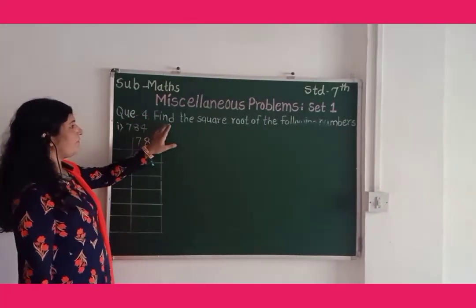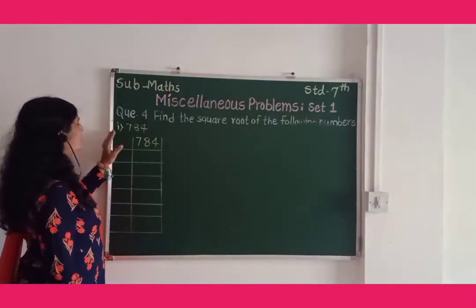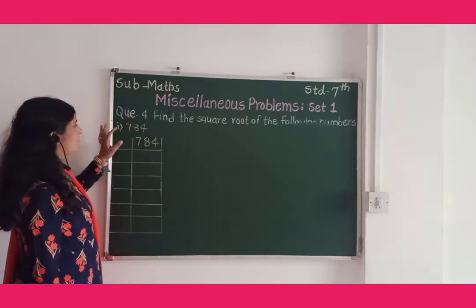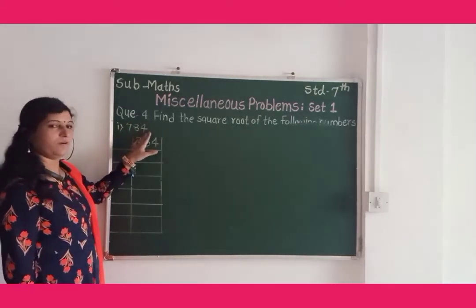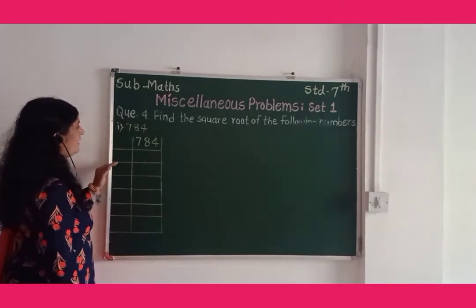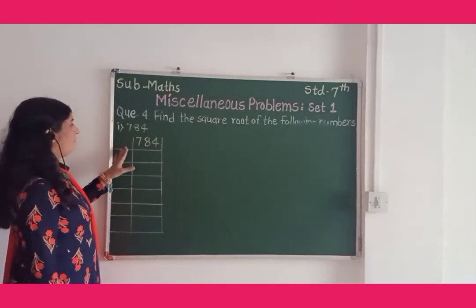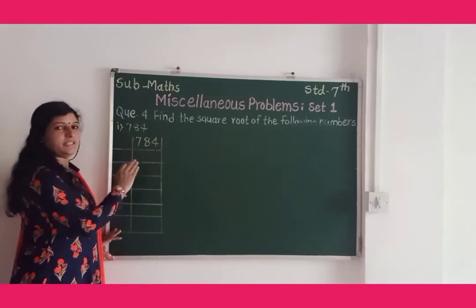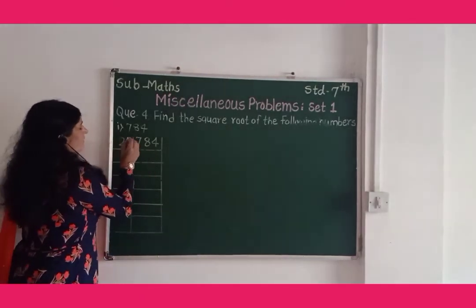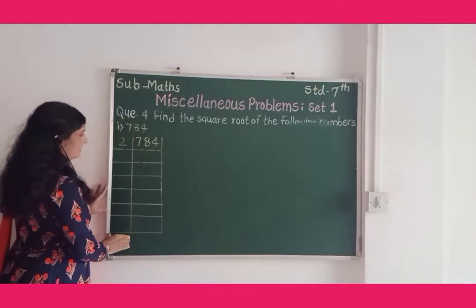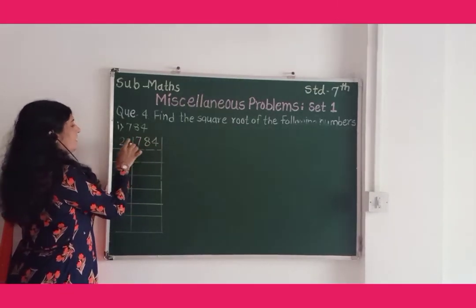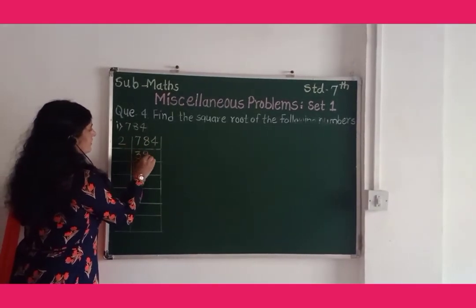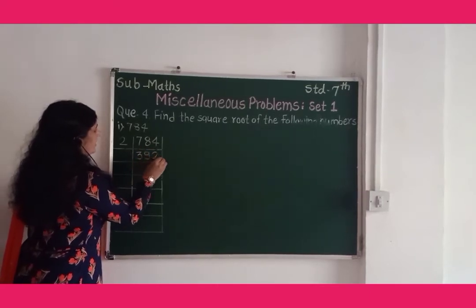Question 4: find the square root of the following numbers. We take the first example from this question: 784. Find the square root of 784. First we find the prime factors of this number by the vertical method. 784 is an even number, so it is divisible by 2. We write the prime factor in this column. When 784 is divided by 2, the answer we get is 392.